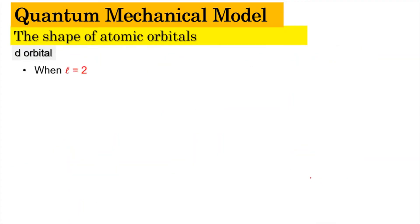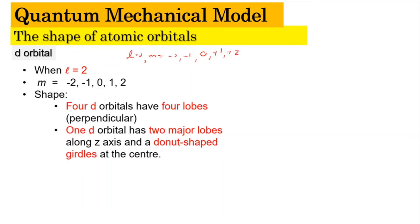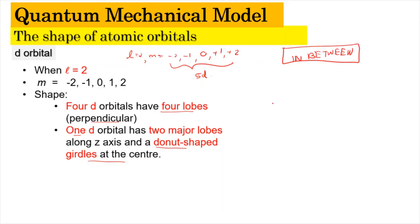The D orbital occurs when L is equal to 2. Since L equals 2, there are 5 possible values of M: negative 2, negative 1, 0, plus 1, and plus 2, giving 5 D orbitals in total. Four of the D orbitals have a clover-leaf shape with 4 loops that are perpendicular, and one D orbital has a donut-shaped ring at the center. The five D orbitals are dxy, dxz, dyz, dx²-y², and dz².